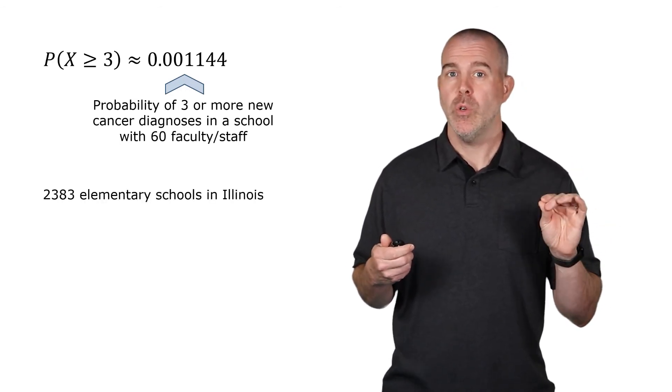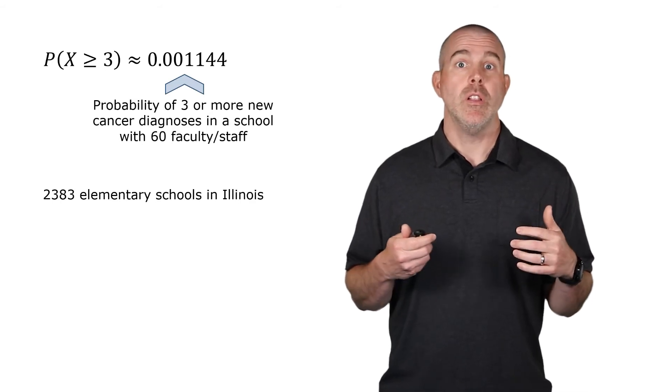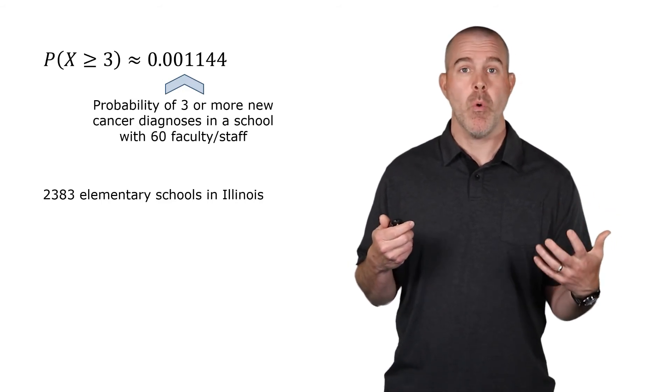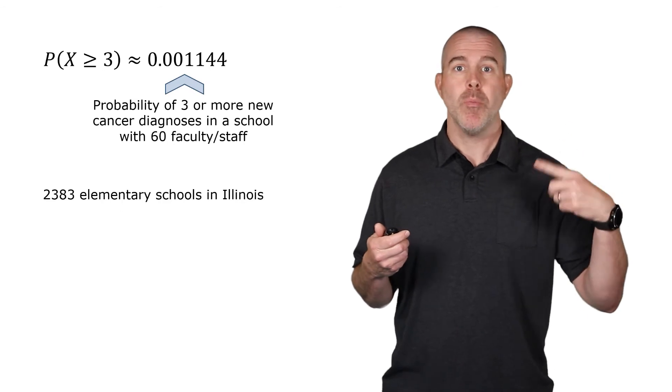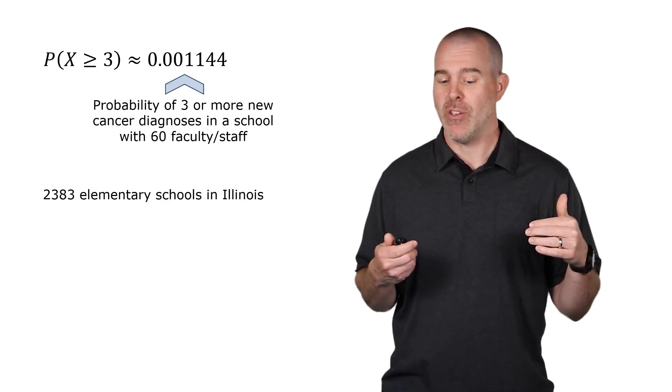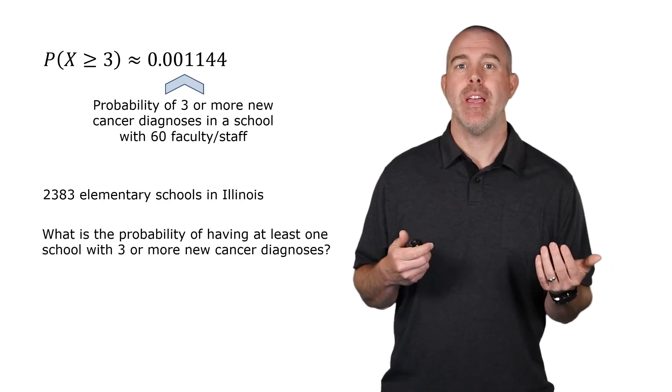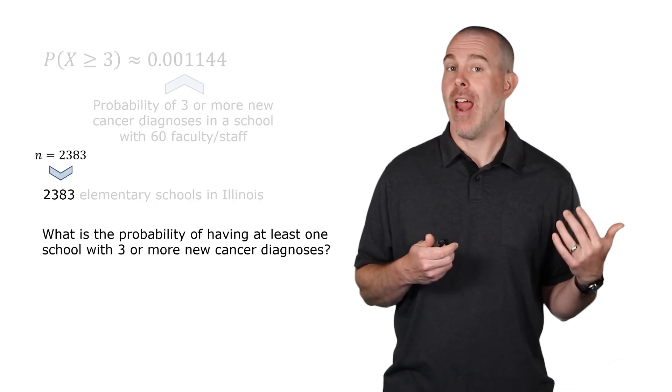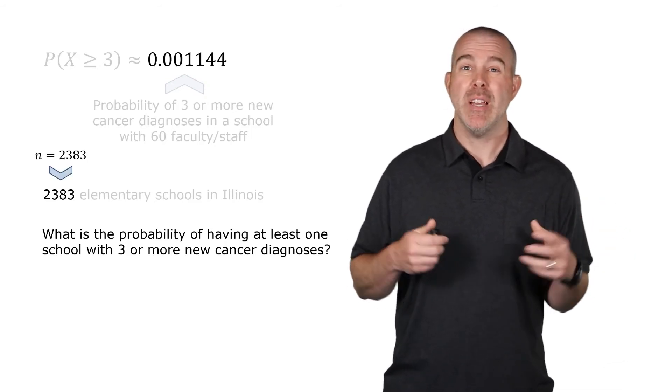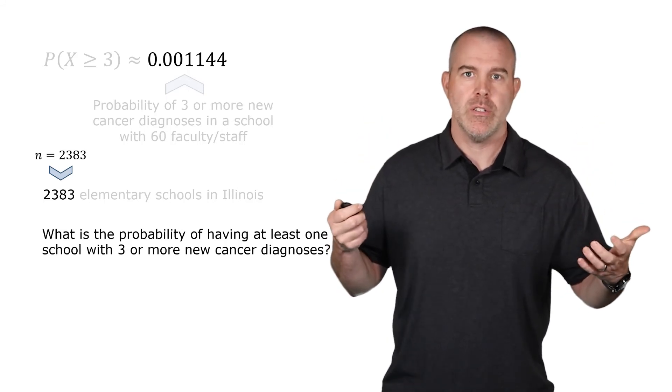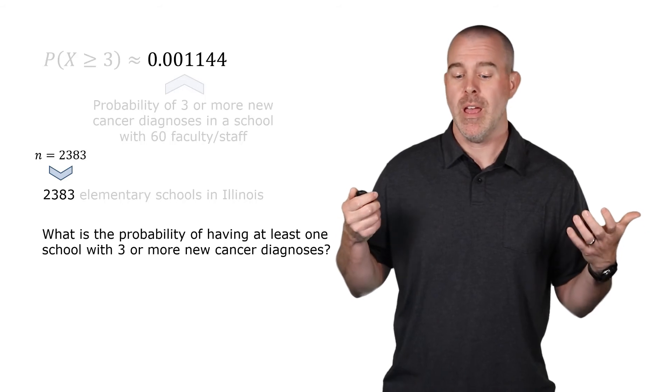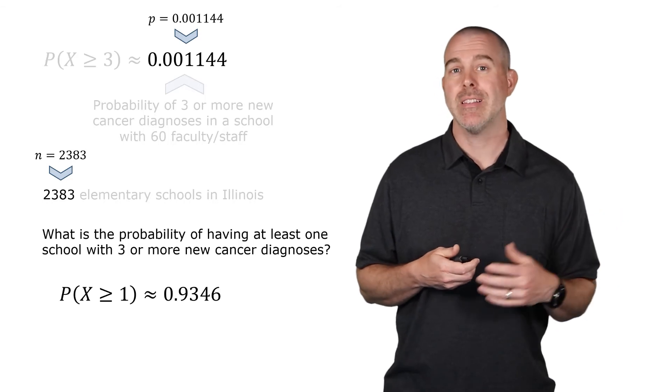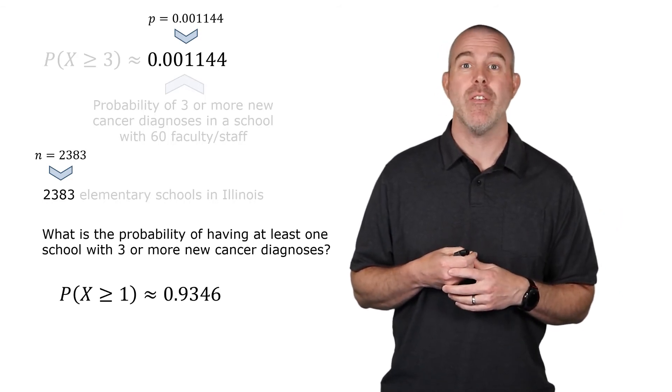But, there are over 2,000 schools in Illinois. So, let's find the probability of having at least one school having three or more people get diagnosed with cancer in one year. So, let's do binomial probability again, but with these values. So, now, what is the probability that we get at least one school with three or more cancer diagnoses? Well, now the 2383 is our n. That's the number of schools. And the probability of success in this case is three or more teachers or staff getting diagnosed with cancer in one year. That's the 0.001144. We'll find the probability that X is at least one, and that one is actually 0.9346.